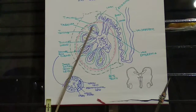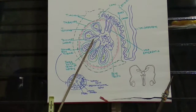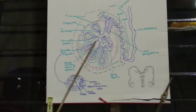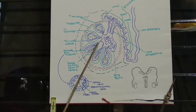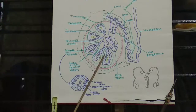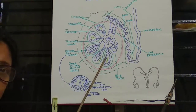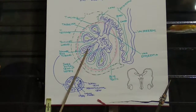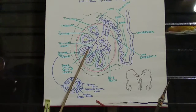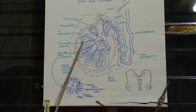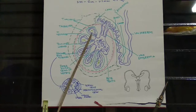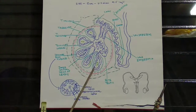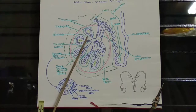Inside the testes there are compartments called testicular lobules. There are roughly 250 to 300 testicular lobules in each testis.